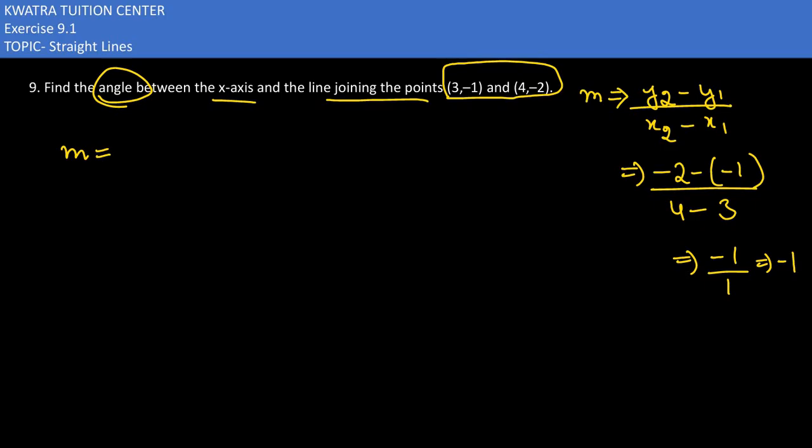So now m would be equal to tan theta, because we need to find the angle. So what formula I can use here? That would be m is equal to tan theta. Putting the value of m as minus 1, so minus 1 equals tan theta.